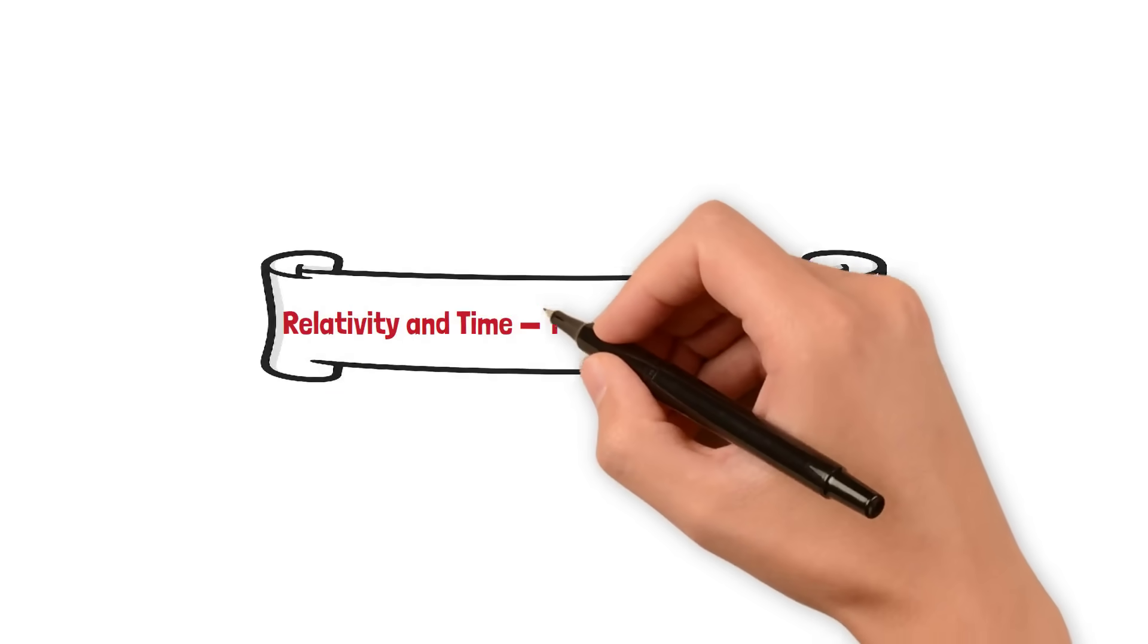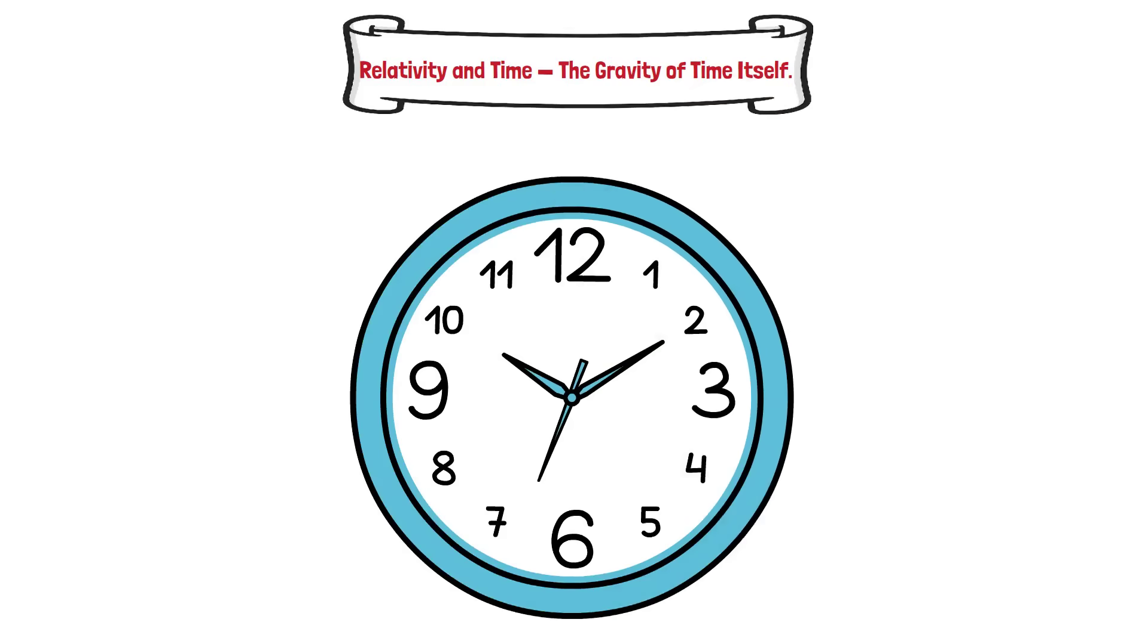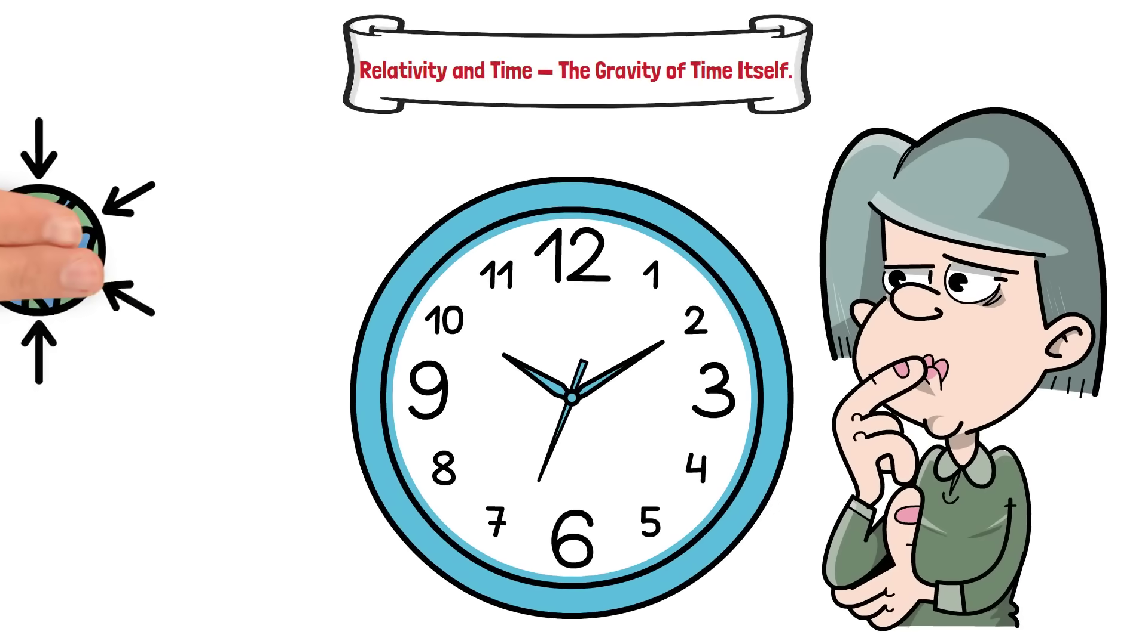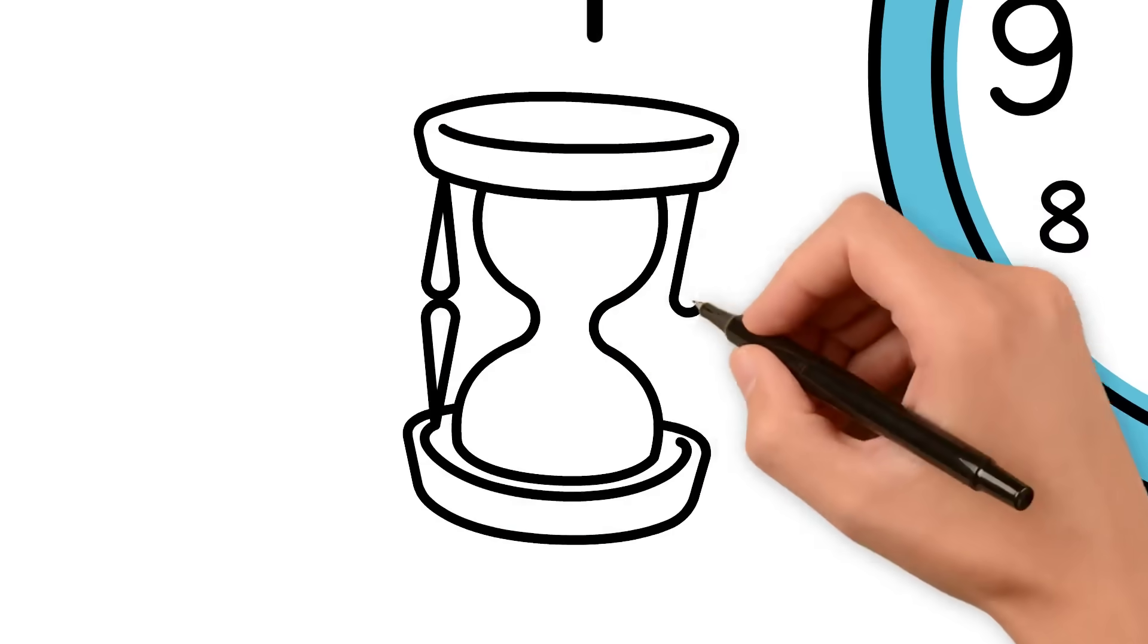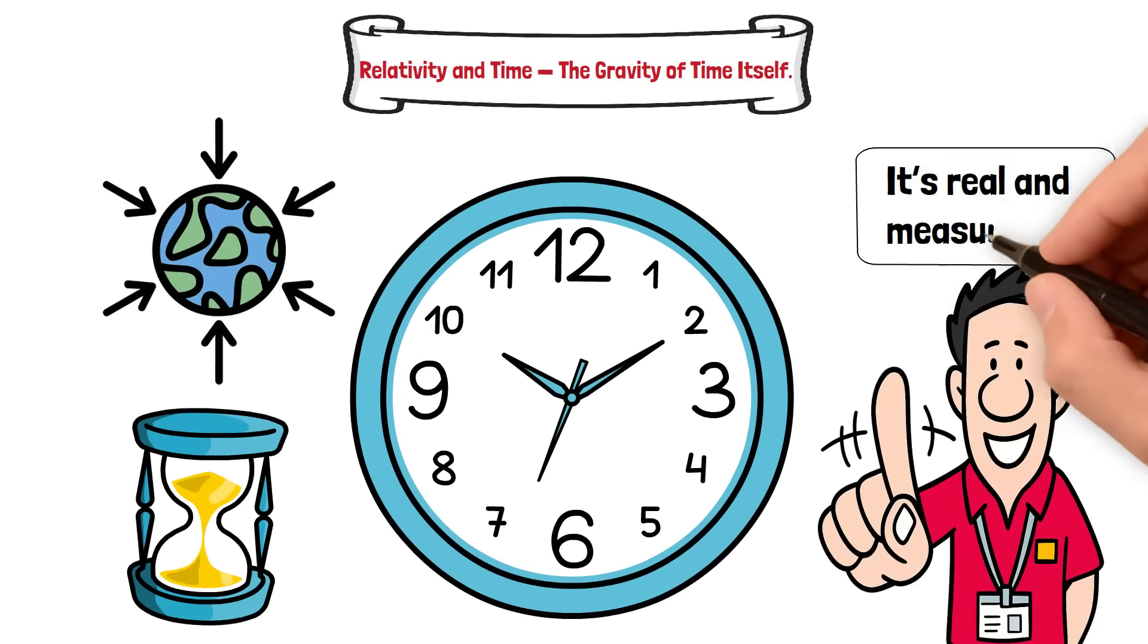Relativity and time: the gravity of time itself. One of the most fascinating outcomes of general relativity is time dilation, the idea that time itself can flow at different speeds depending on gravity. The stronger the gravitational field, the slower time moves. This isn't science fiction, it's real and measurable.